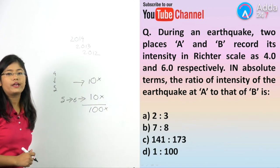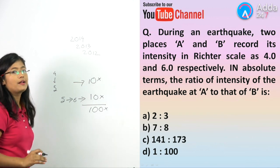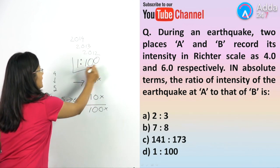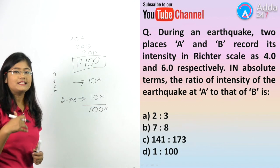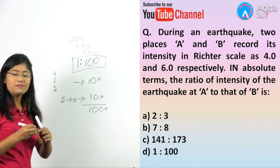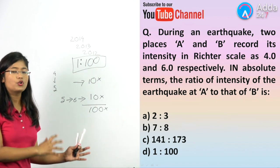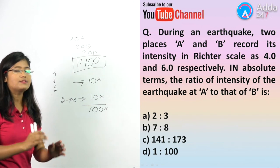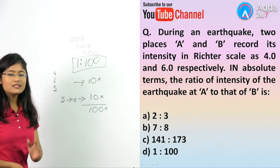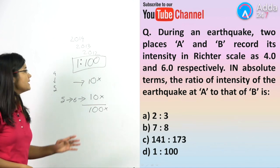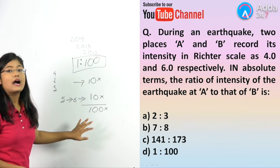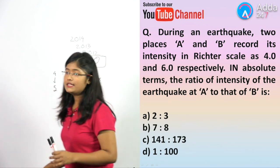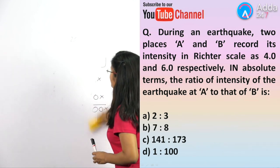So from the four options given, your most probable answer is option number D, that is 1 is to 100. However, when this same question was given as an example in NCERT, it was mentioned that if magnitude increases from 4 to 6, it is a thousand times more intense. But since 1 is to 1000 is not given in the options, our most correct answer is 1 is to 100. So option number D is the correct answer.